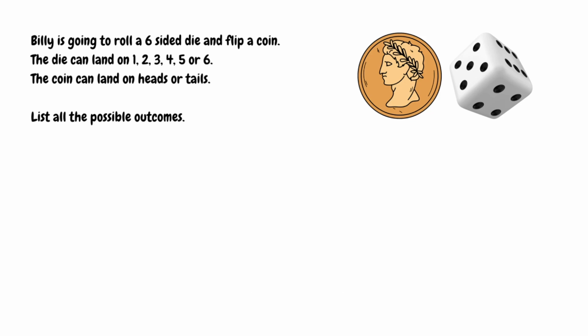Systematic listing is a technique that we use to list all the possible combinations or outcomes in a specific situation in an organised way. By using it, it ensures that no combination or outcome is missed out.